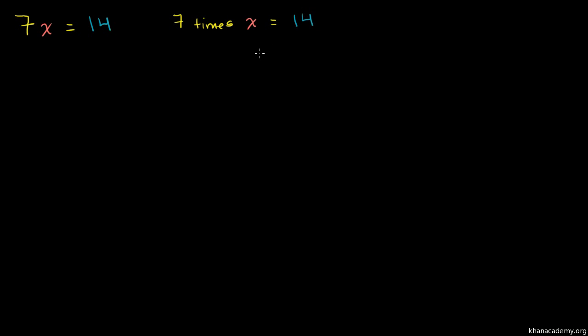Now you might be able to do this in your head. You could literally go through the 7 times tables and say, well, 7 times 1 is equal to 7, so that won't work. 7 times 2 is equal to 14, so 2 works here. So you would immediately be able to solve it. You would immediately, just by trying different numbers out, say hey, that's going to be a 2.